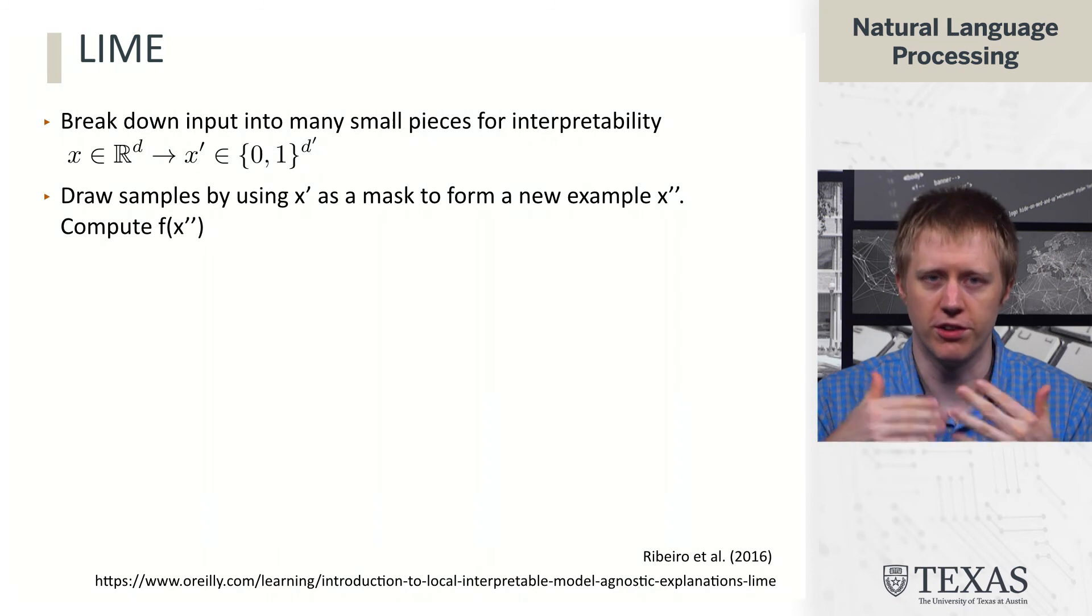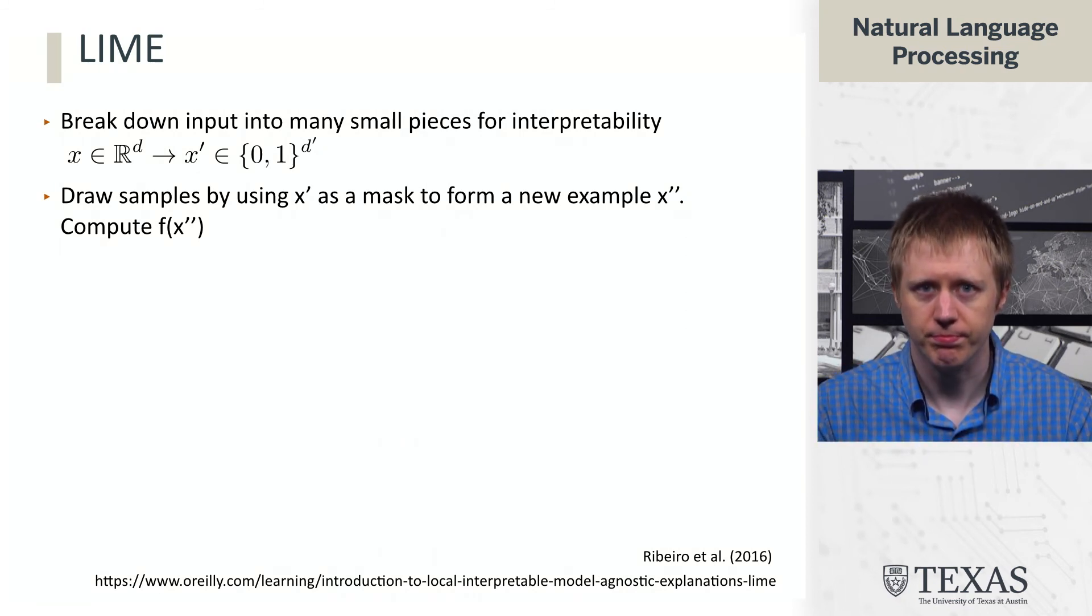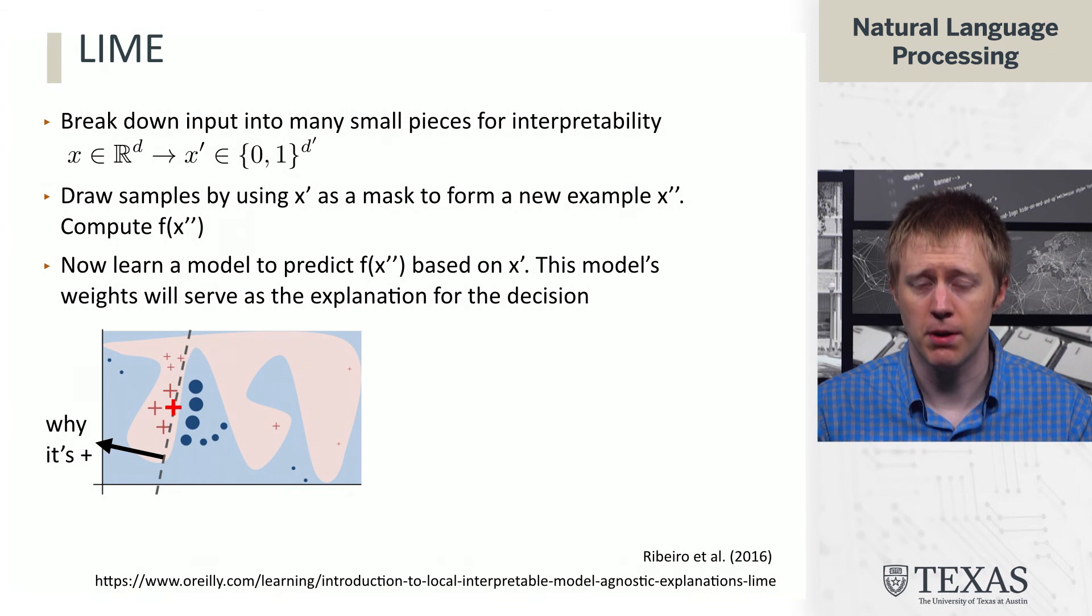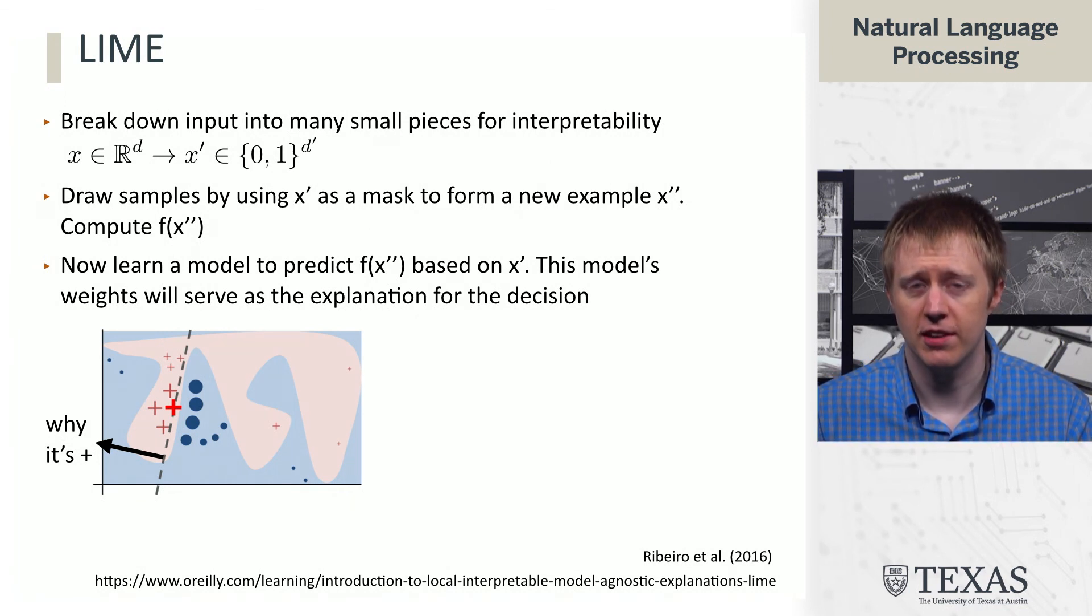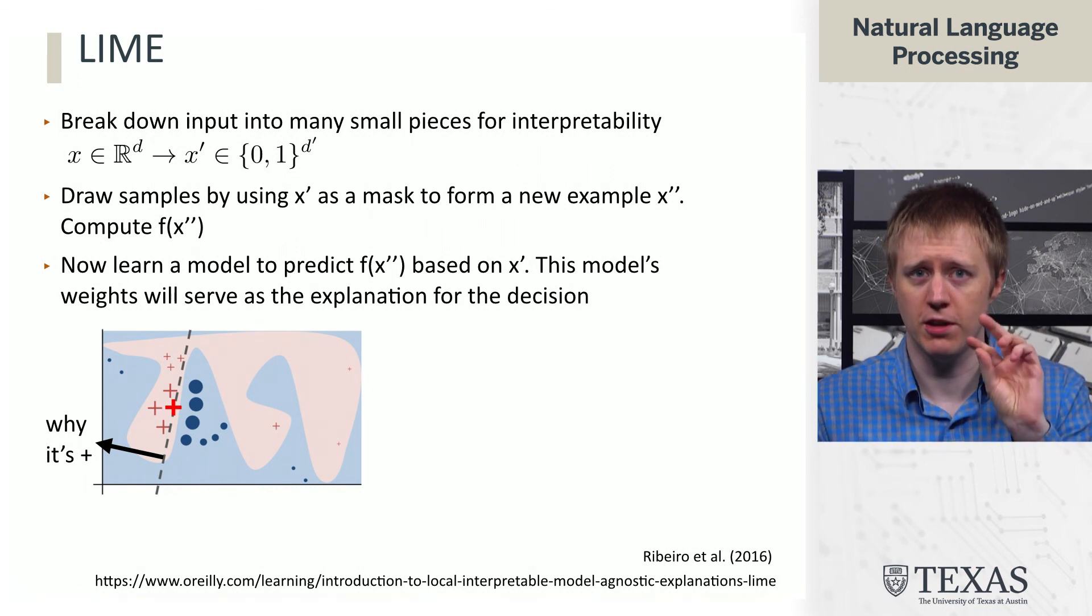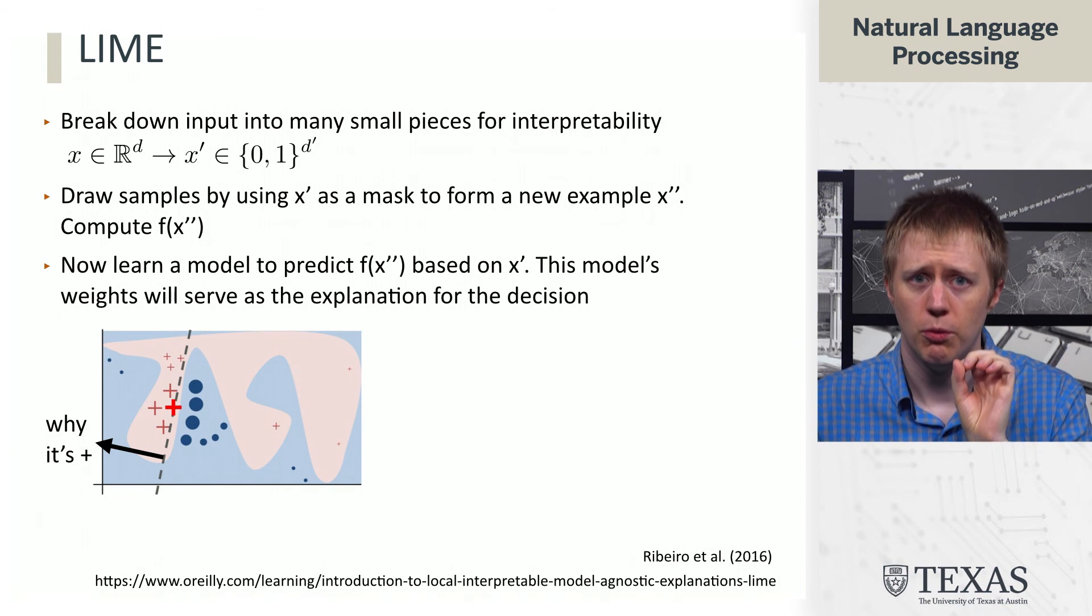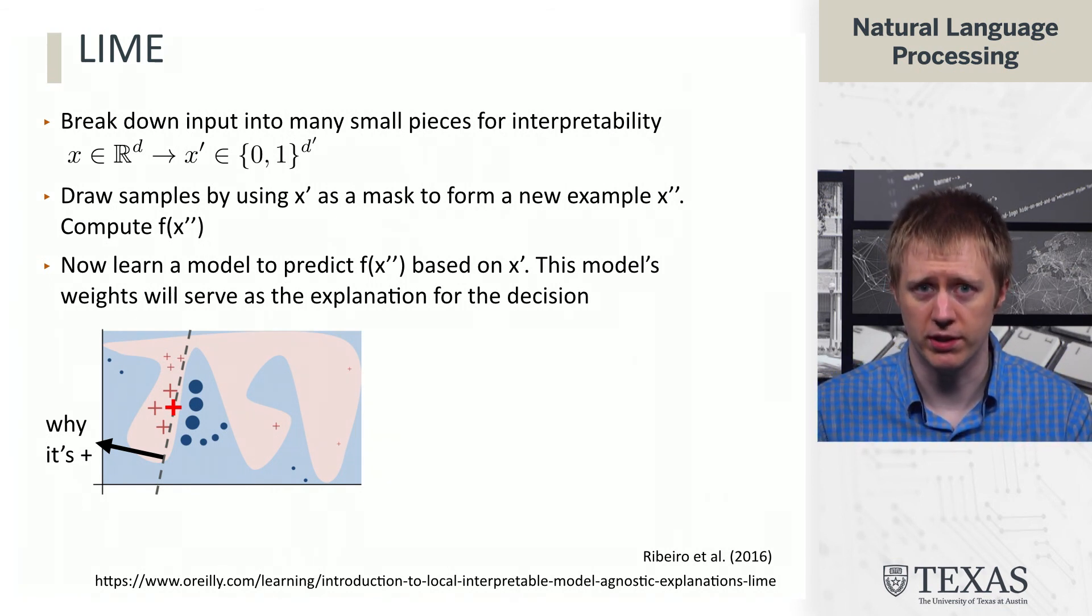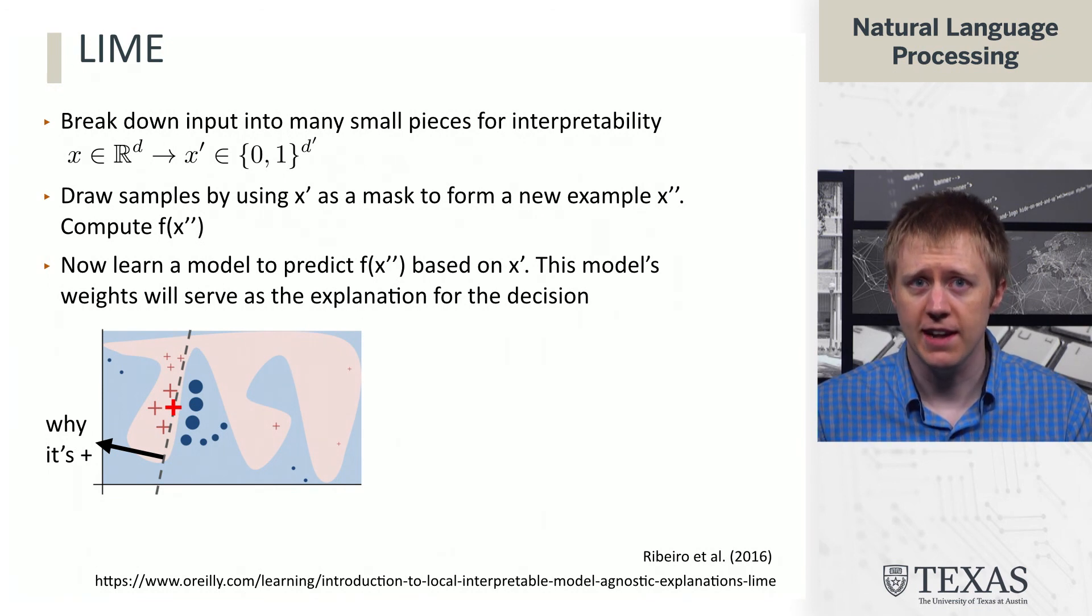So what this does is we get a bunch of individual decisions based on f of x double prime. And then we want to learn a simple classifier that says, based on x prime, based on which chunks I'm including or not, can I predict what the model's final prediction f of x double prime is going to be?